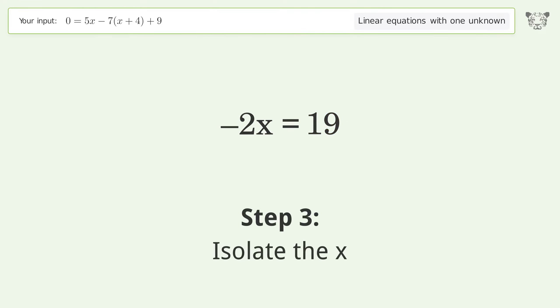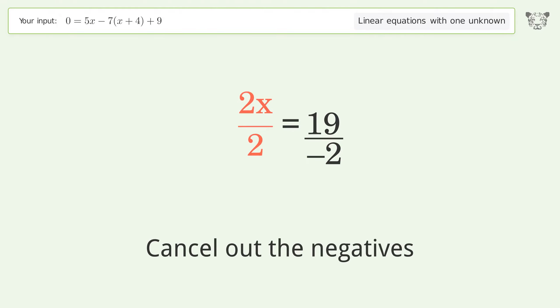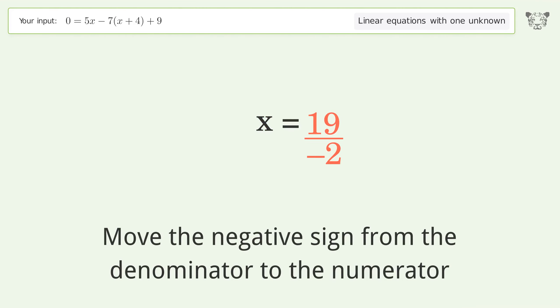Isolate the x. Divide both sides by negative 2. Cancel out the negatives. Simplify the fraction. Move the negative sign from the denominator to the numerator.